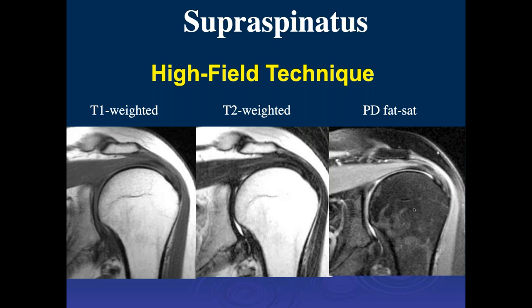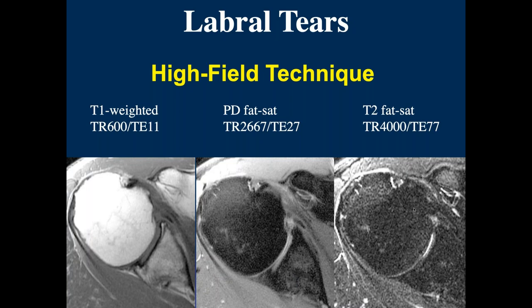For high field axial techniques, we prefer T1 so that we don't suppress the fat and can use fat as a contrast agent especially for soft tissue changes, then PD fat sat which allows us to see the labrum and tendons.